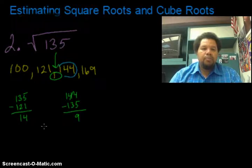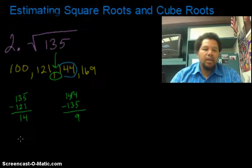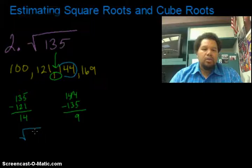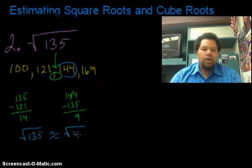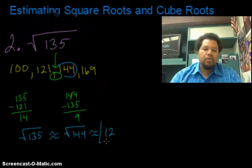So that means I'm going to have the approximation. So I'm going to say the square root of 135 is about the same as the square root of 144, which is 12. So 12 is my answer.